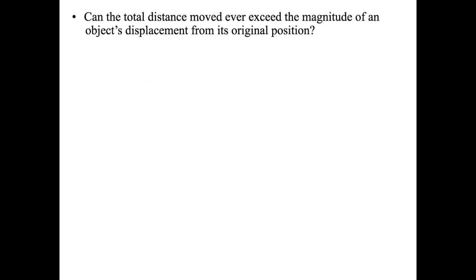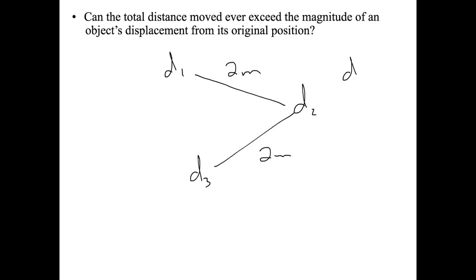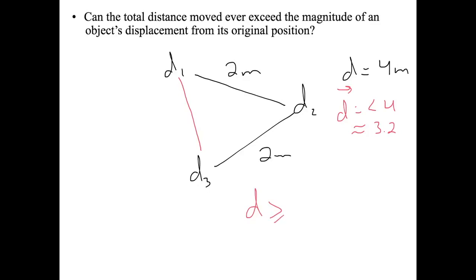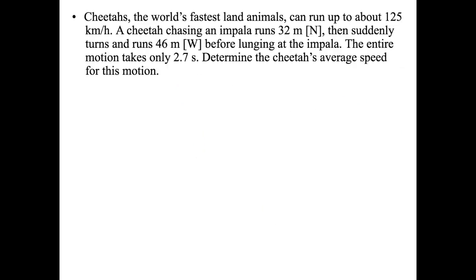Can the total distance moved ever exceed the magnitude of the object's displacement? That's kind of the opposite. If d1, d2, and d3 are set up such that the first leg is 2 meters and the second is 2 meters, distance equals 4 meters, but displacement is simply the shortest distance between beginning and end — maybe 3.2 meters. So yes, distance can exceed displacement.